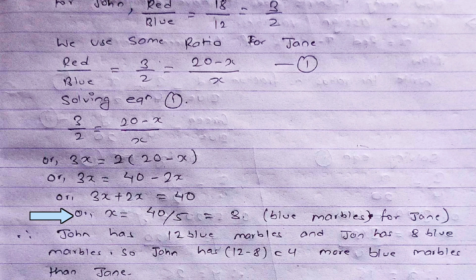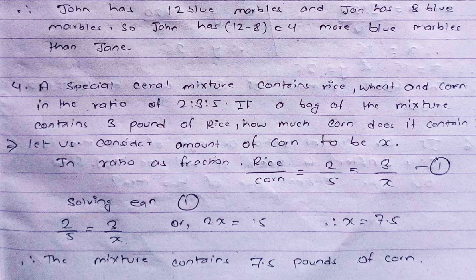John has 12 blue marbles and Jane has 8 blue marbles. The question asks how many more blue marbles John has compared to Jane: 12 minus 8 equals 4. Therefore, John has 4 more blue marbles than Jane.